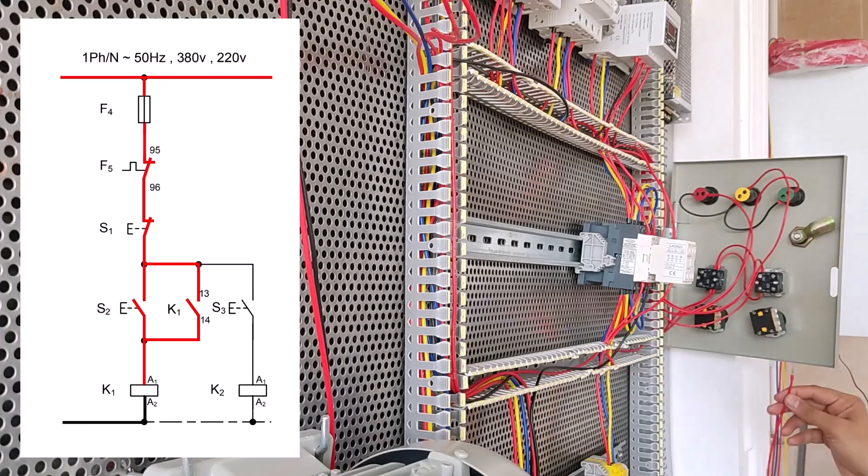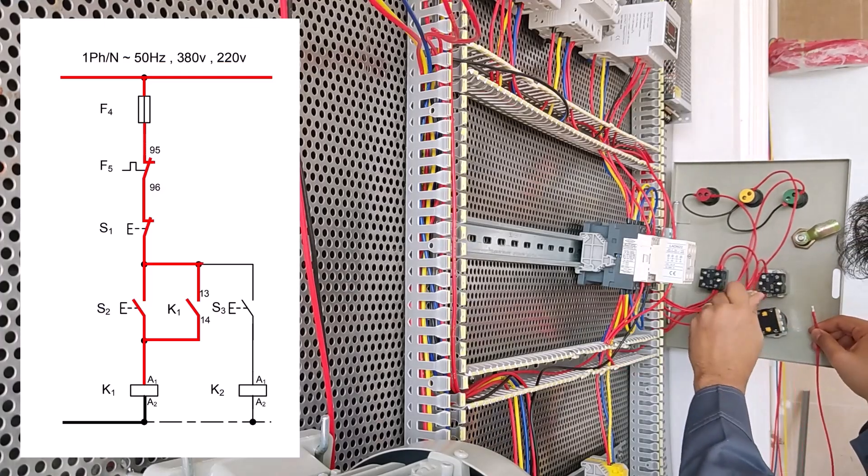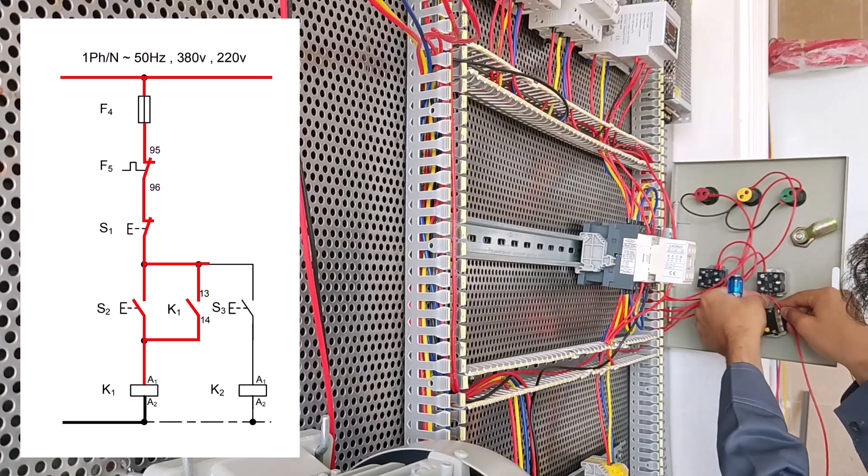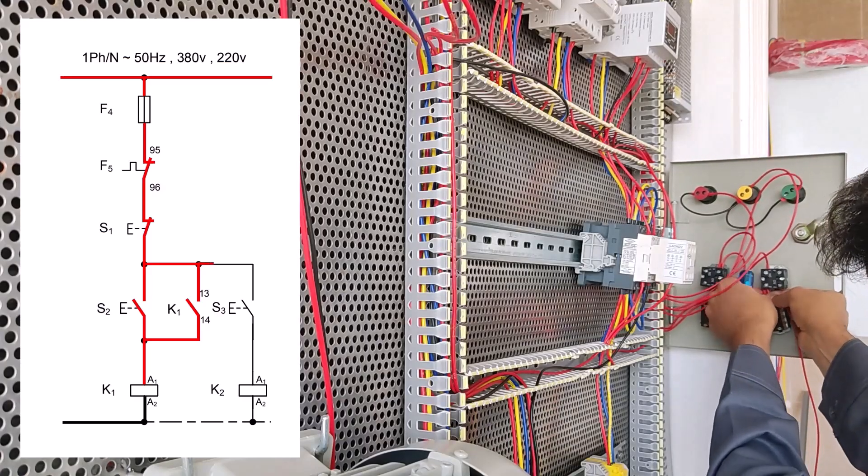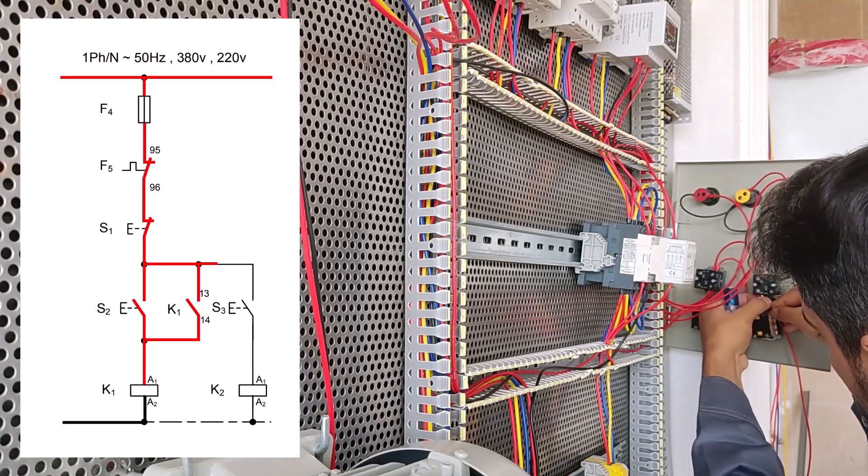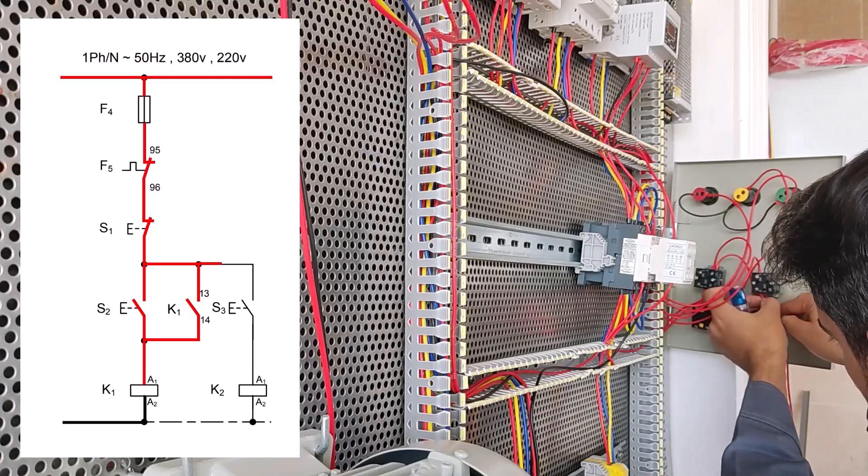Okay, this column is complete. Now we connect a wire from 12 stop S1 to 13 start S3.